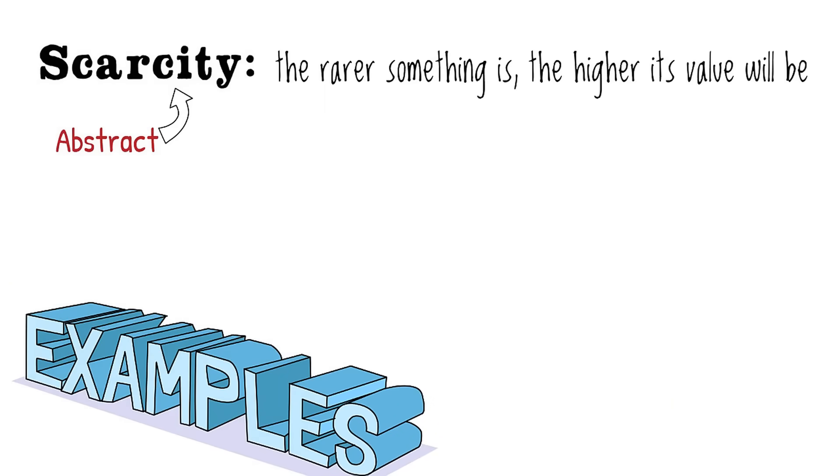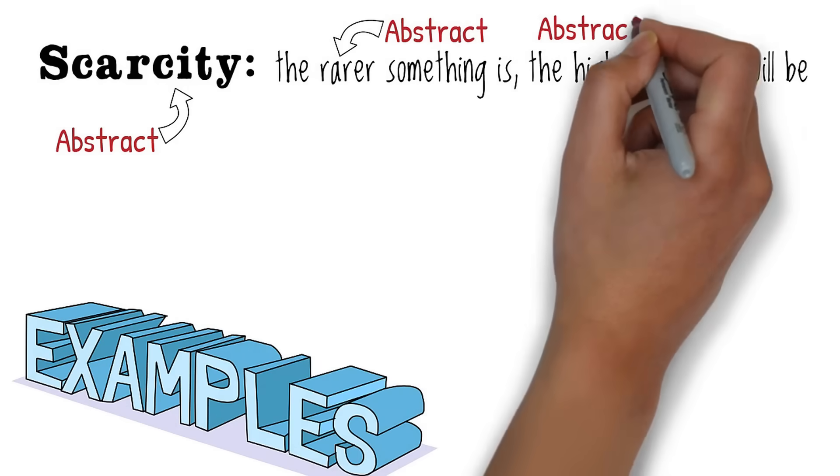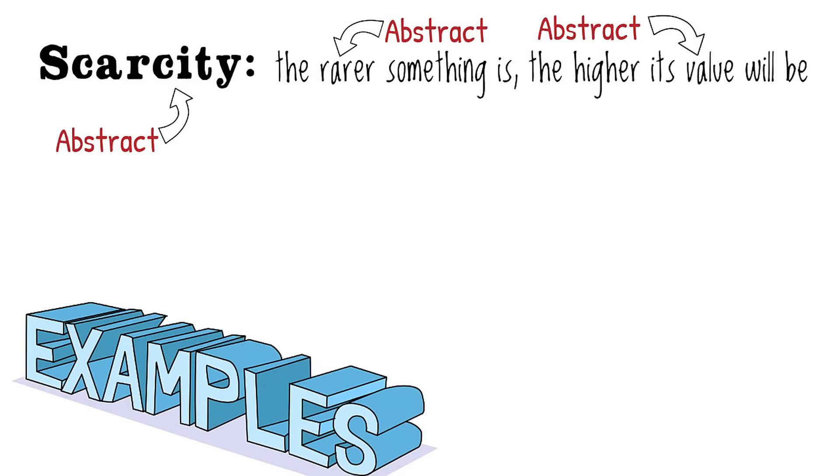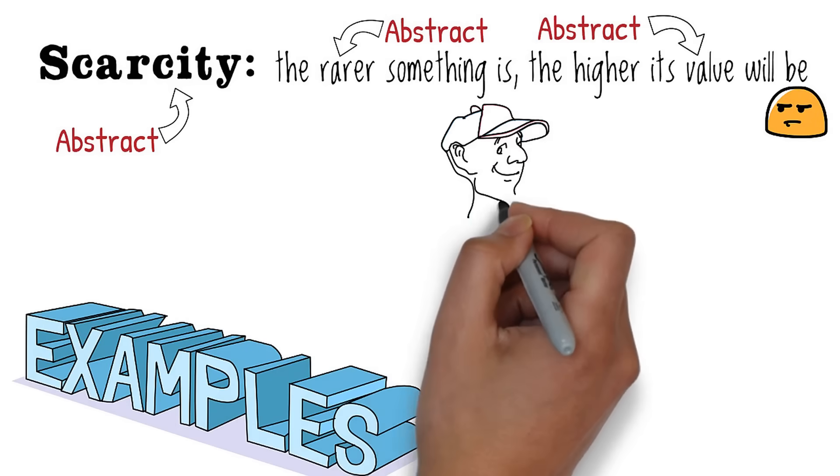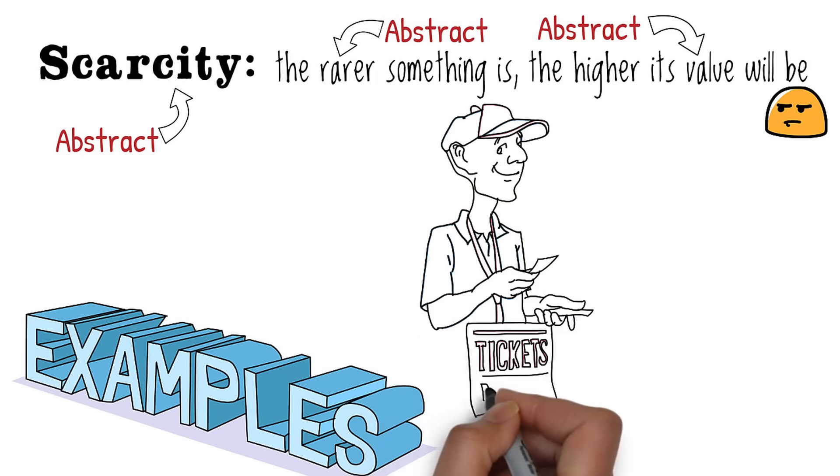For example, scarcity is an abstract idea. You can explain it as the rarer something is, the higher its value will be. But we've used abstract terms to explain an abstract idea. Not so helpful.